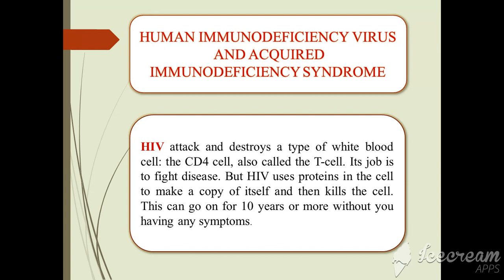Human immunodeficiency virus and acquired immunodeficiency syndrome: HIV attacks and destroys a type of white blood cell, the CD4 cell, also called the T cell. It is the cell's job to fight disease, but HIV uses proteins in the cell to make a copy of itself and then kill the cell. This can go on for 10 years or more without you having any symptoms.